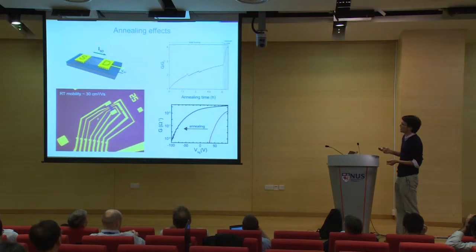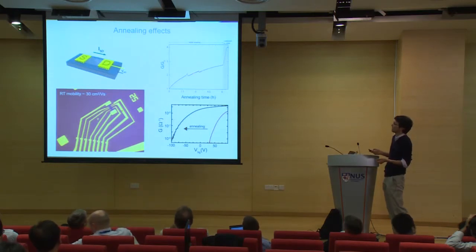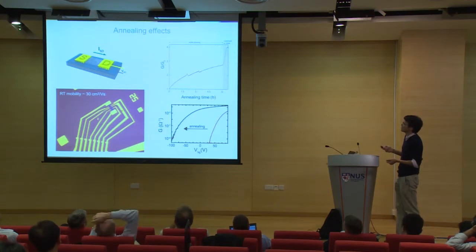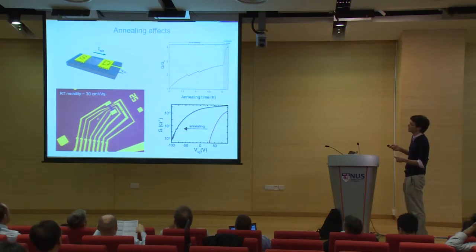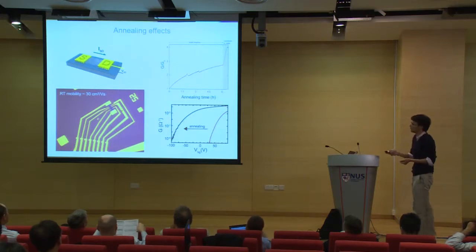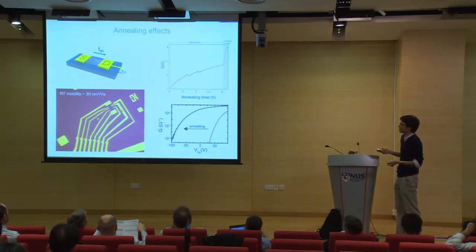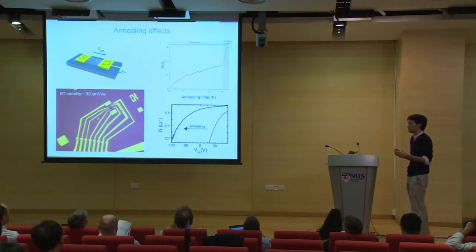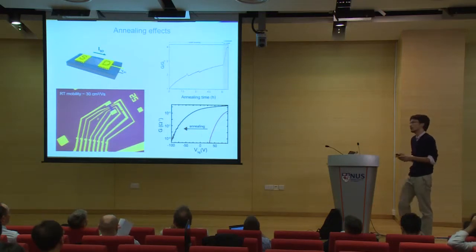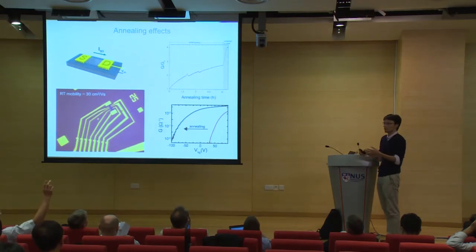Here's the change in conductance as a function of annealing time. If you anneal up to 400 K, the conductance goes up, and when you stop the annealing and cool down to 300 K, the conductance actually further increases — the temperature dependence is reversed; conductance now increases with decreasing temperature. The resulting transfer characteristics show the whole transfer curve shifts more than 100 volts to the left, corresponding to almost 10^12 doping densities occurring during this annealing process.